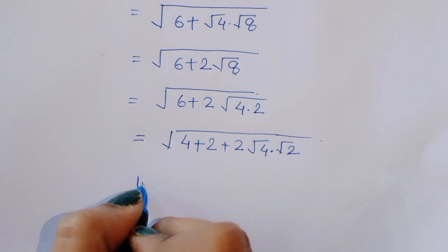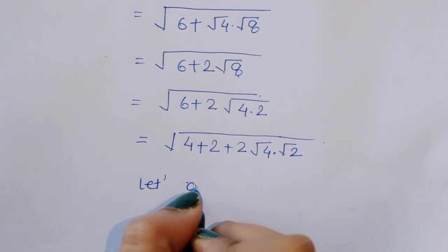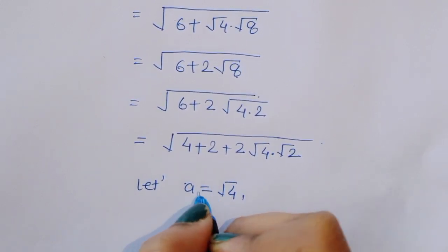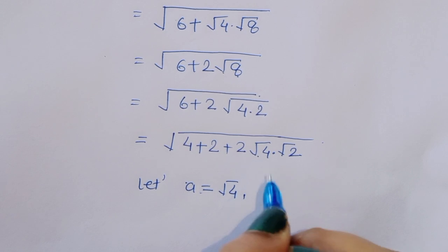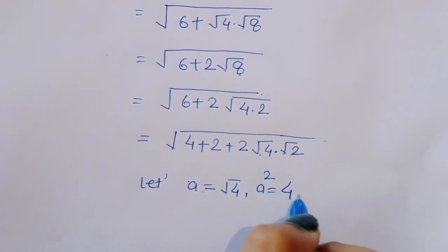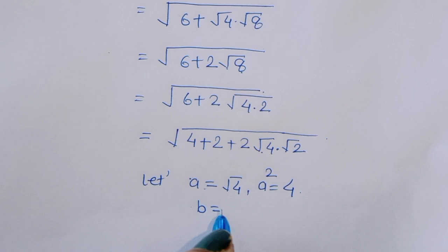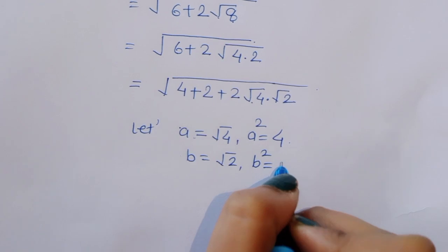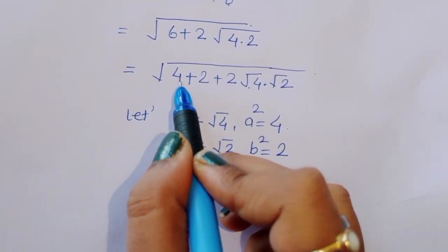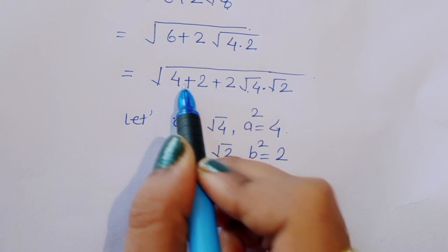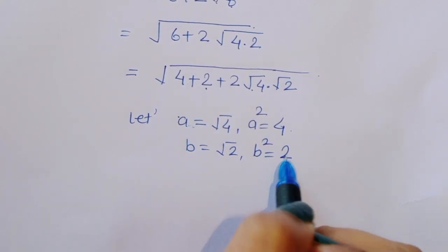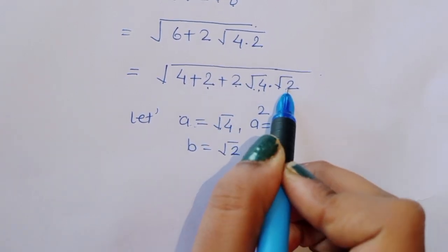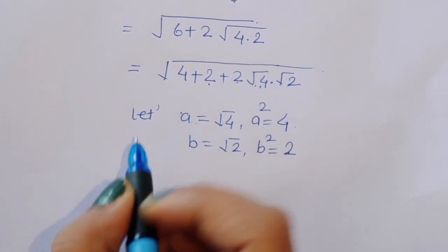Let's consider a is equal to square root of 4 and b is equal to square root of 2. Then a squared is equal to 4 and b squared is equal to 2. So we can see the expression is a squared plus b squared plus 2 times a times b, which is square root of 4 times square root of 2.